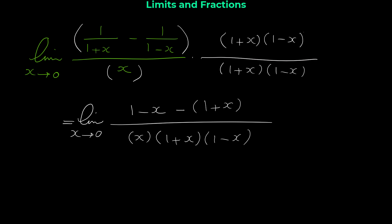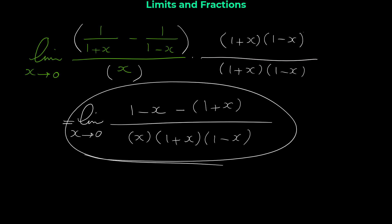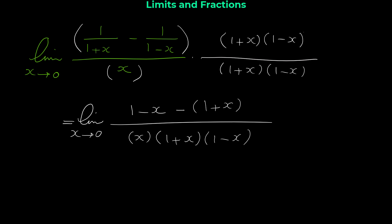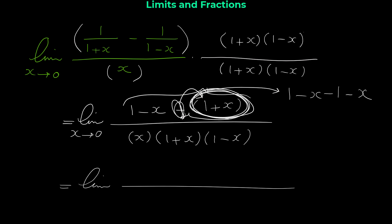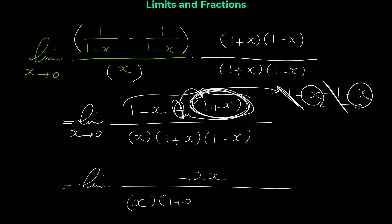Don't forget the middle negative, so we have negative (1 + x). Now this new limit has no fractions at all. We simply need to simplify the numerator: we have (1 − x) minus (1 + x). Distributing the negative gives minus 1 minus x. The 1s cancel, leaving negative x and negative x, so the numerator is negative 2x. The denominator is x times (1 + x) times (1 − x) as x approaches 0.